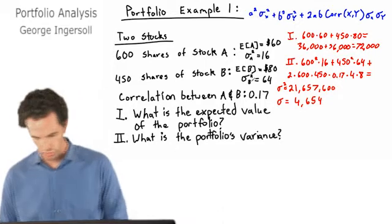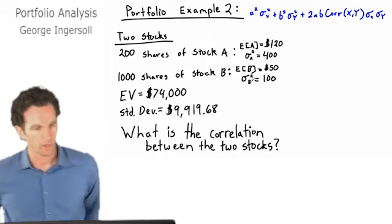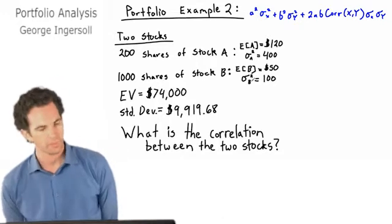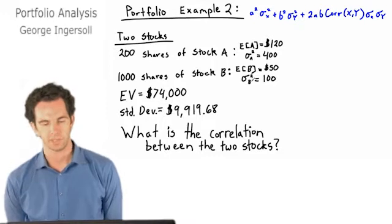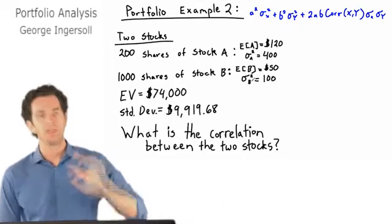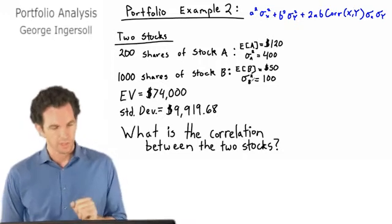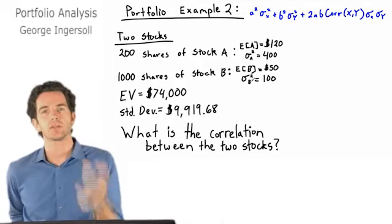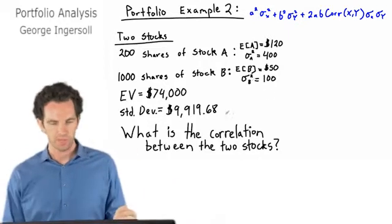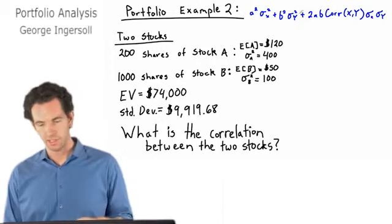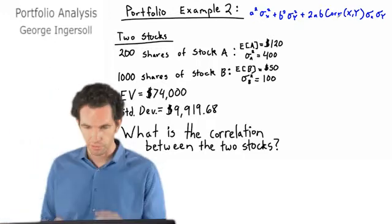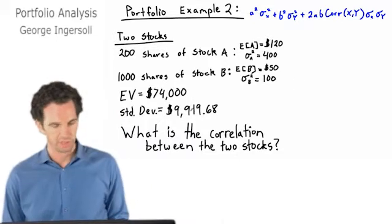Let's move on to another example with a slight twist. We have 200 shares of stock A, with an expected value of 120 and a variance of 400. We have 1,000 shares of stock B, with an expected value of 50 and a variance of 100. This time, we are not given the correlation between these two stocks — instead, we're given the portfolio's standard deviation and asked to solve for the correlation.